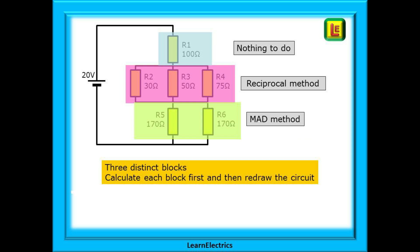That makes things a lot easier. Block 1 needs nothing doing. Block 2 is three parallel resistors, so use the reciprocal method to calculate this. And block 3 is just two resistors, and the MAD method is the most appropriate. Calculate these and redraw the circuit.